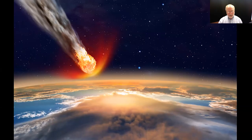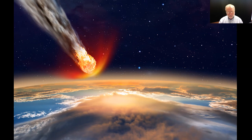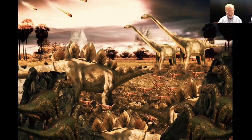When I ask my students for examples of events that could cause severe ecosystem disruption, this is usually one of the first ones that is mentioned. Everyone wants to go big — meteor impacts, massive flooding, volcanic eruptions — these are the first things that they consider. This is probably because most students are aware of the asteroid impact called the KT event that was responsible for the extinction of the dinosaurs.